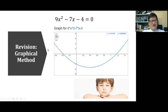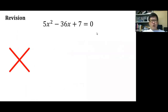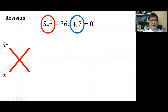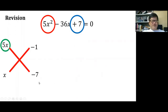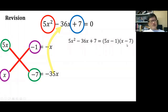The second method we looked at was factorization, which we did about two weeks ago. If you're asked to solve a quadratic equation by factorization, focus on 5x squared first — that equals 5x times x. Then focus on 7: you need minus 1 times minus 7 because of the minus 36. Cross-multiplying: 5x times minus 7 is minus 35x, x times minus 1 is minus x, totaling minus 36x. So your factors are 5x minus 1 and x minus 7.